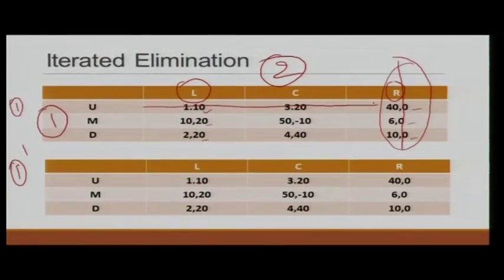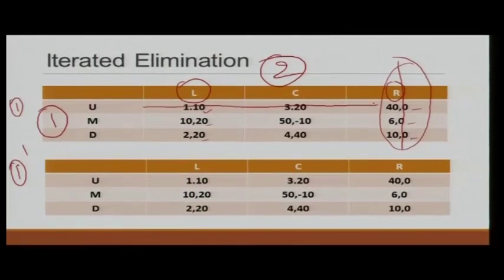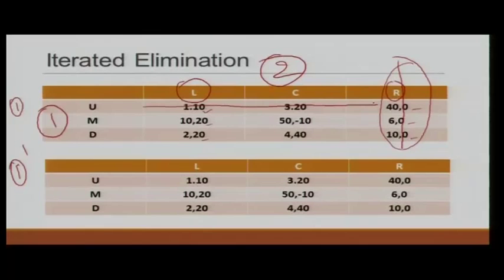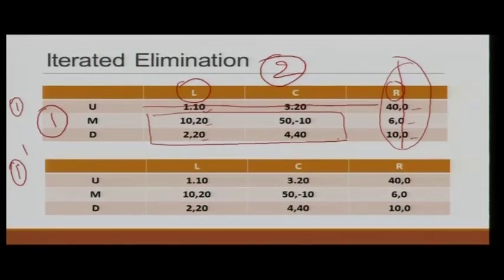Now player 1 is rational, so because M exists, he will never play U. Looking at the next step of common knowledge: not only is player 2 rational, but player 2 knows that player 1 is rational. So player 2 knows player 1 will not play U in the reduced game. Now we have a much smaller game involving only two strategies from each player.